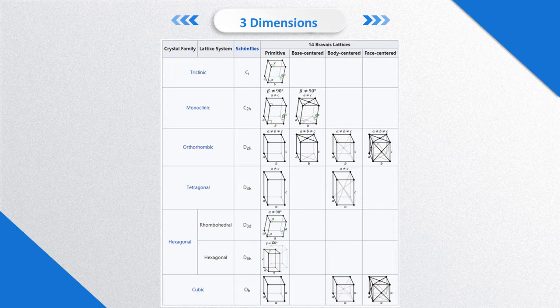The centering types identify the locations of the lattice points in the unit cell. They are triclinic, monoclinic, orthorhombic, tetragonal, hexagonal, and cubic group.